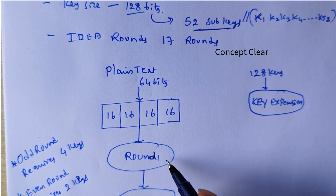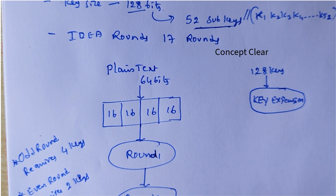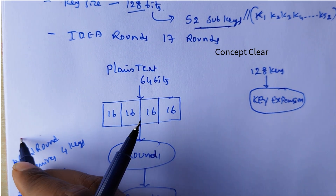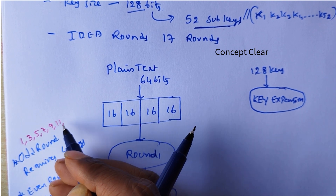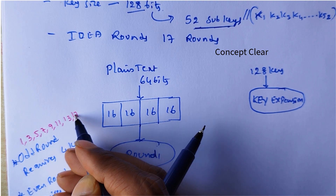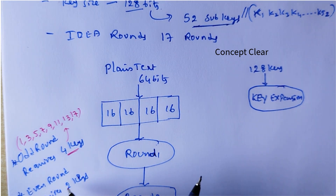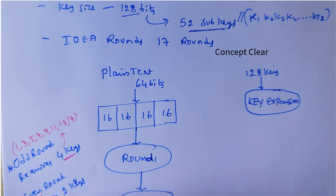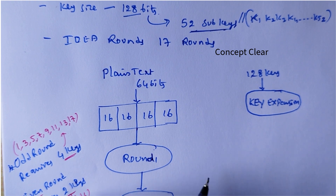For example, round 1 is an odd round, so it requires 4 keys. Round 2 is an even number, so it requires 2 keys. The odd rounds are 1, 3, 5, 7, 9, 11, 13, 15, 17 — these require 4 keys. The even rounds are 2, 4, 6, 8, 10, 12, 14, 16 — these require 2 keys.